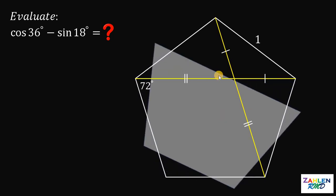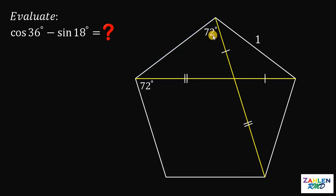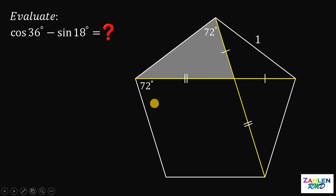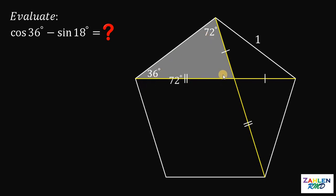Let's rotate this trapezoid. This angle is also 72 degrees by the same computation. Now let's focus on the triangle at the top. This angle here is 108 minus 72 degrees, which equals 36 degrees. We have 36 degrees and we want cosine of 36 degrees. The sum of interior angles of this triangle is 180 degrees, so the other angle must be 72 degrees.